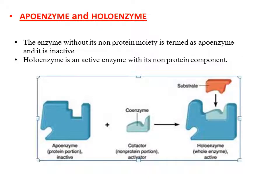Apo enzyme and Holo enzyme: the enzyme without the non-protein moiety is termed the apo enzyme, and it is inactive. If the enzyme is composed of two parts — a protein portion and a non-protein portion (the coenzyme) — when combined, we get the holo enzyme, which consists of the protein part and the non-protein part. The active site forms only when both parts are present.